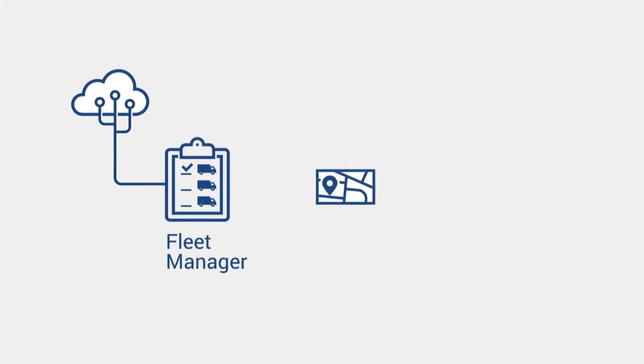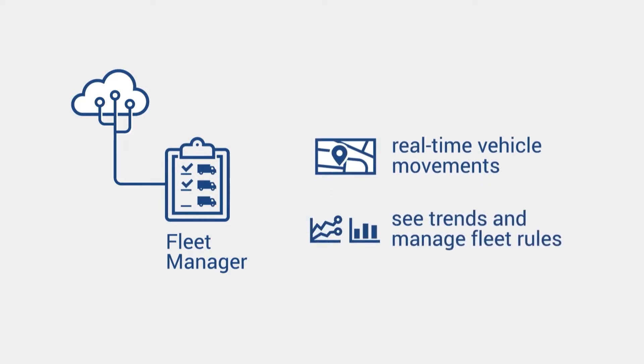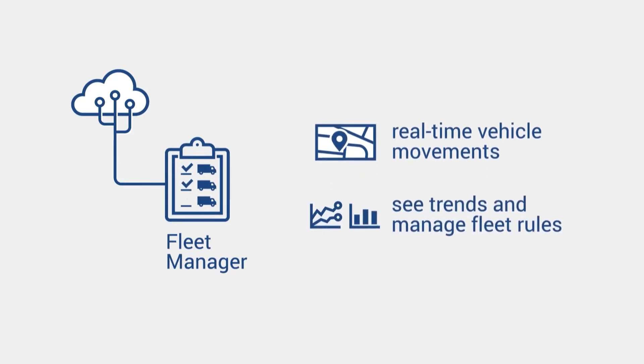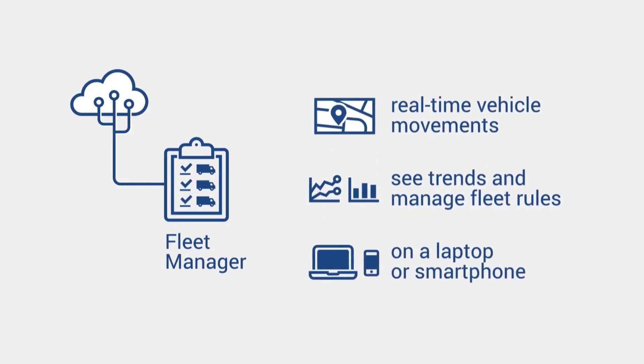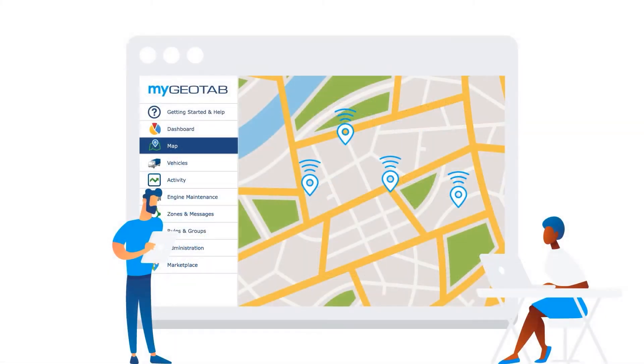The next element is fleet management, which is the services — usually cloud-based software as a service — that you offer to fleets so they can take that data and do something useful with it. That includes rules engines, reporting, analysis of the data, route planning, and visualization on maps.